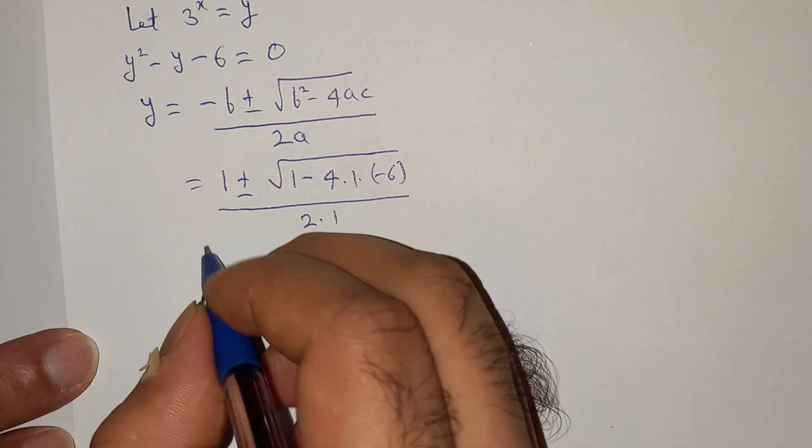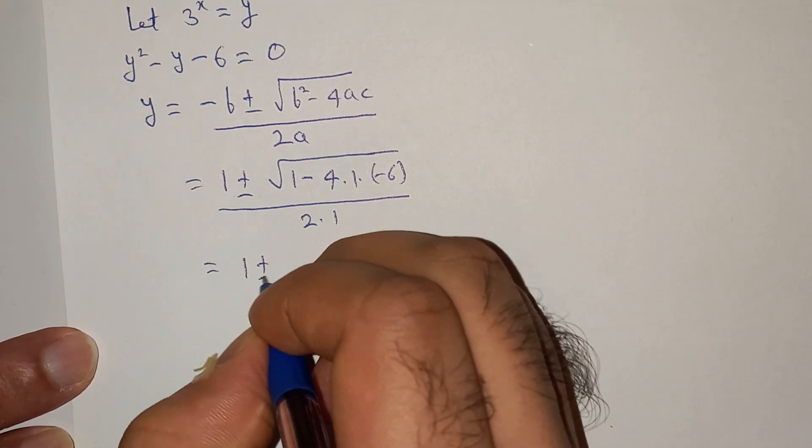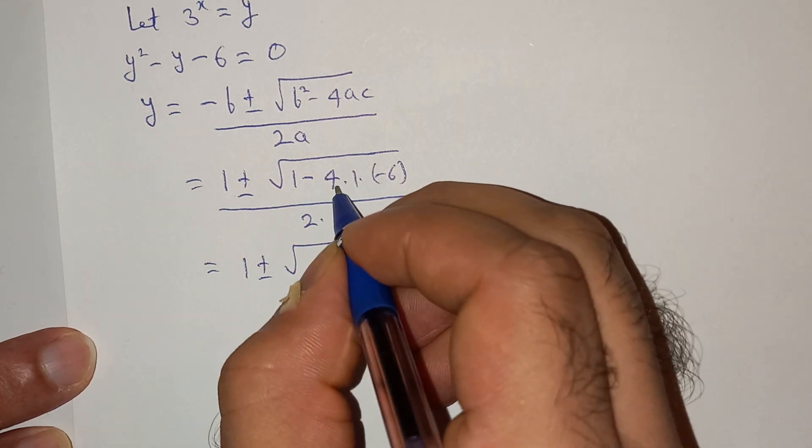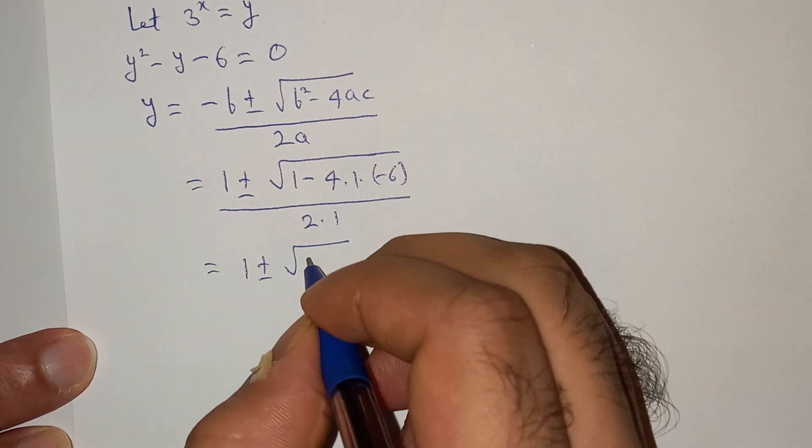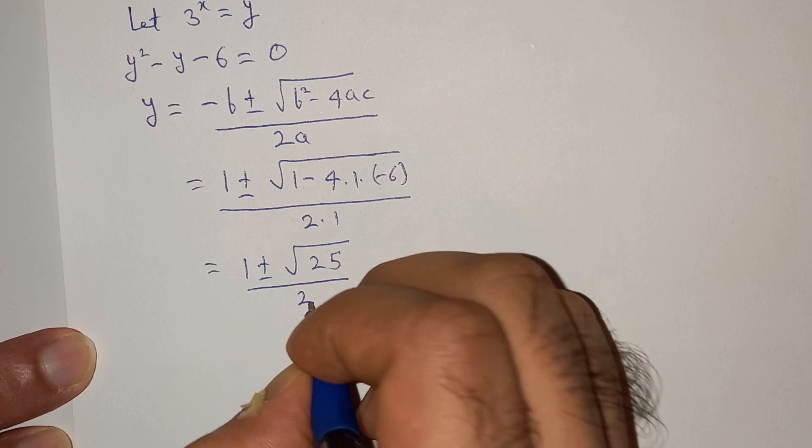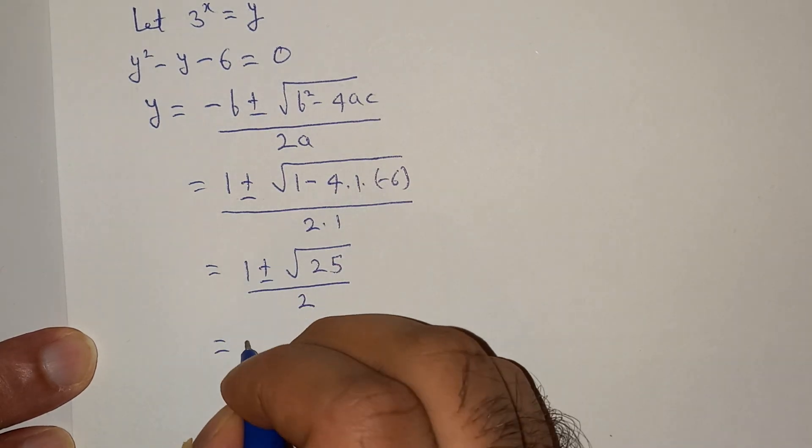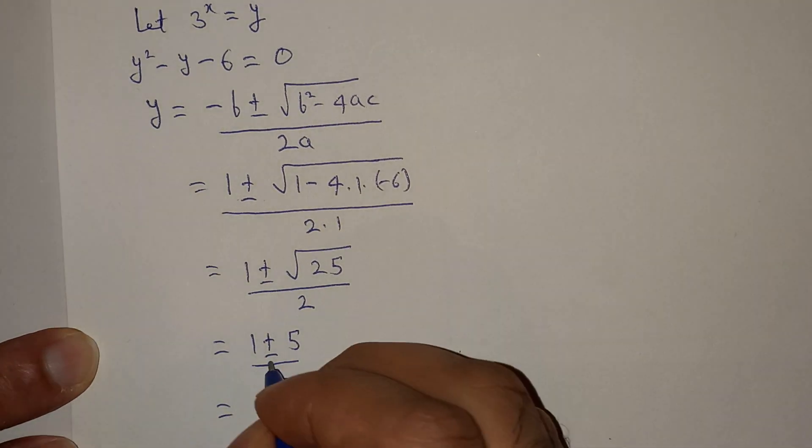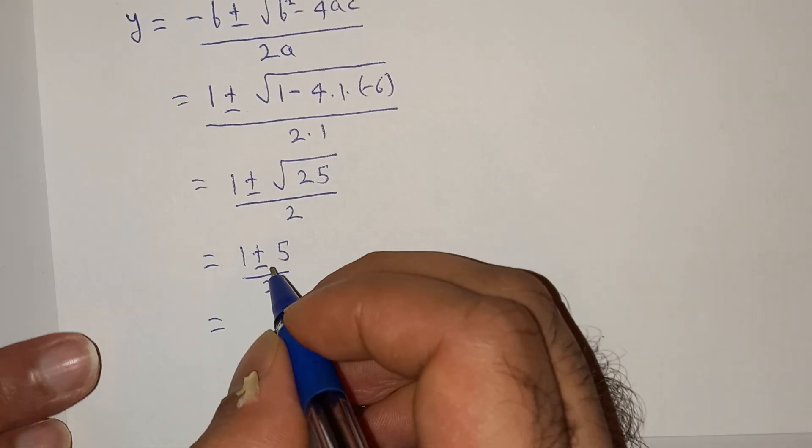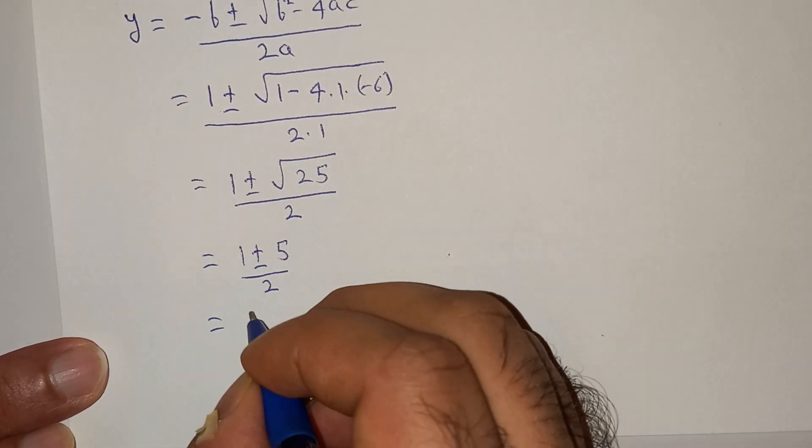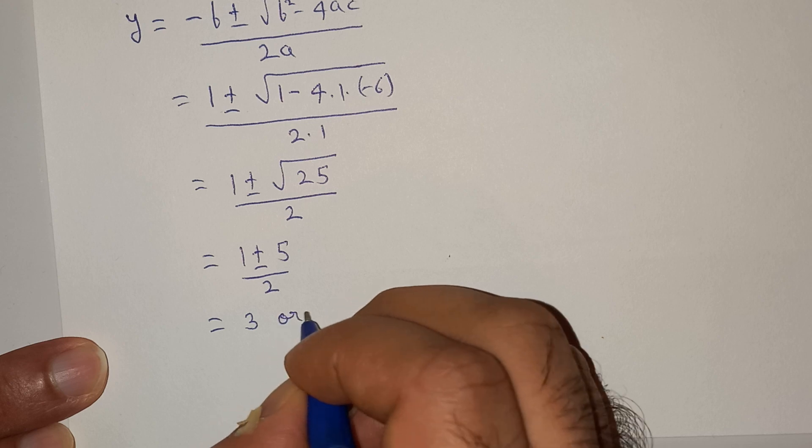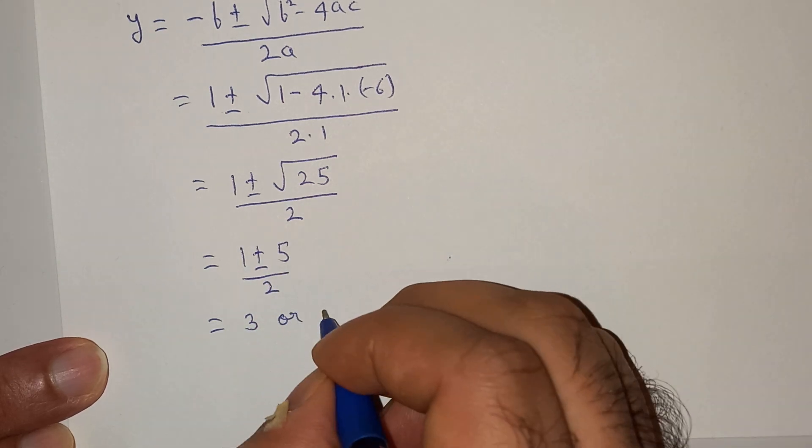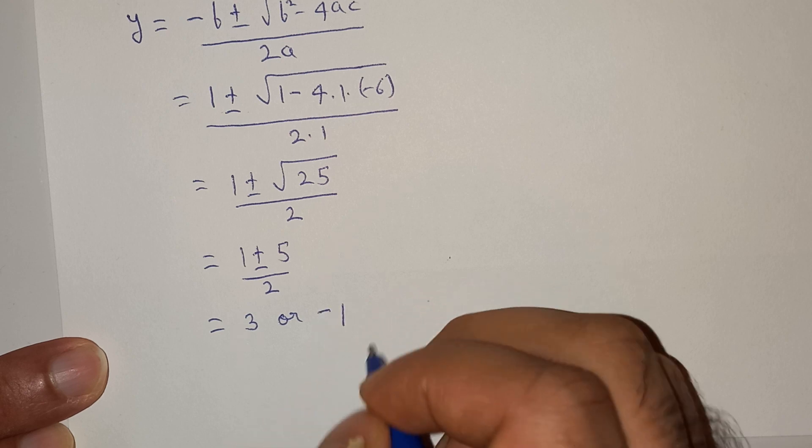All right, so this will give us the value 1 plus minus root, so 6 multiplied by 4 is 24 plus 1 is 25, root 5 divided by 2. Equals to 1 plus minus 5 by 2. So 1 plus 5 is 6, 6 by 2 is 3, or 1 minus 5 is minus 4 divided by 2 is minus 2. So these are the two solutions for y.